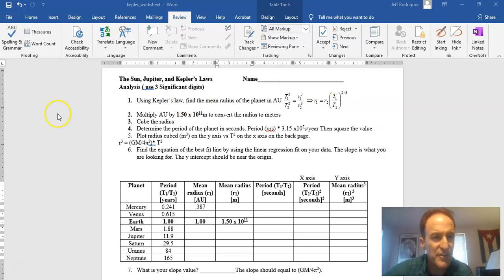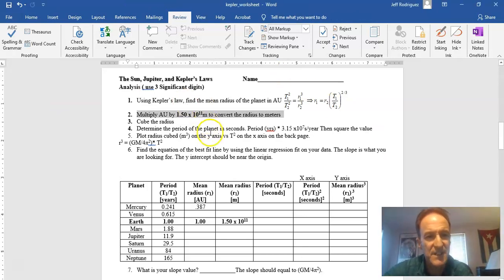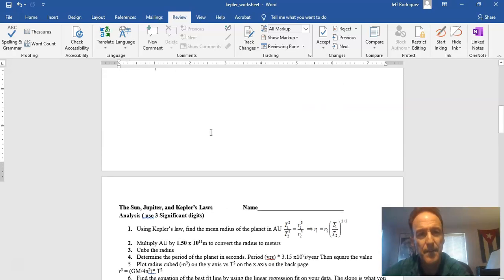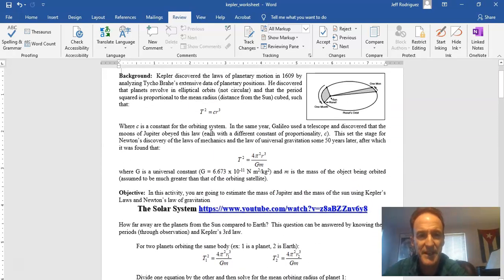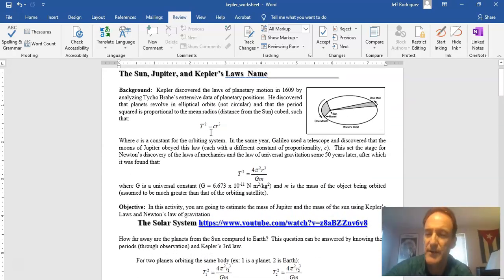Okay, here's a look at the second page of the handout. It starts with a description in the beginning. So the sun, Jupiter, and Kepler's laws. Here's Kepler's third law of harmony. The ratio of the period of a planet squared to the length of the semi-major axis cubed, mean radius cubed, is a constant.